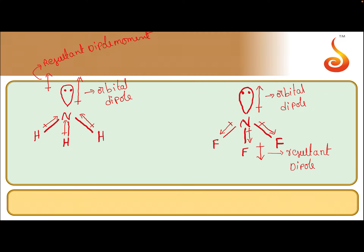Because of this, there is some cancellation of the dipole moment. The orbital dipole is in the upward direction and the resultant dipole moment is in the downward direction, so there is a cancellation — but not completely; it won't become 0. Because the orbital dipole is in the opposite direction to the resultant dipole moment, the NF3 molecule's dipole moment decreases.